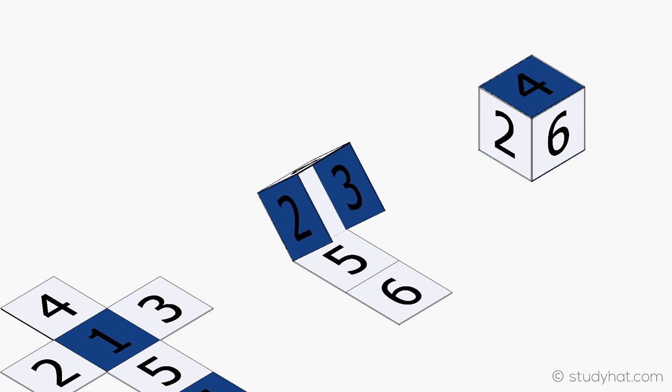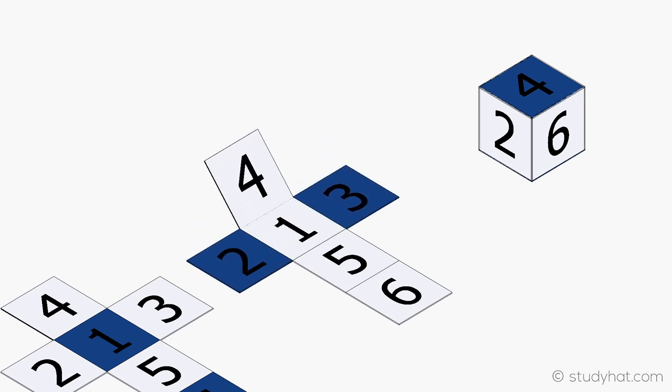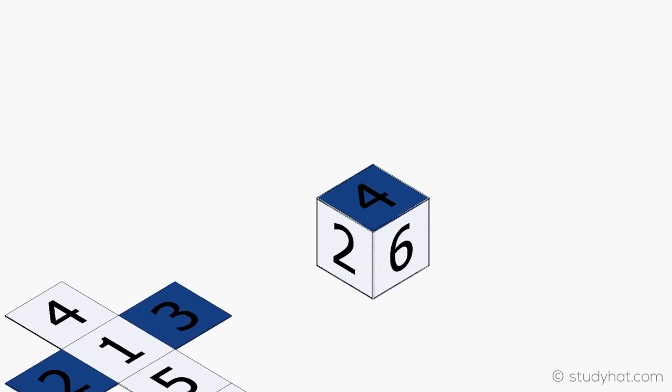1 and 6 will end up opposite each other when folded into a cube. 2 and 3 will also end up opposite each other, and so will 4 and 5.